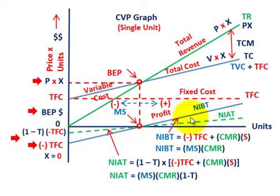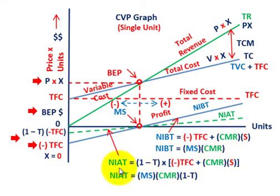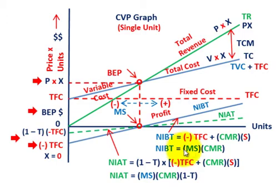For net income after taxes, that's shown as a green dotted line: (1 − T) times (−TFC + CMR × Sales), or equivalently: margin of safety times CMR times (1 − T). That ends our discussion on using the margin of safety to determine net income before taxes and net income after taxes.